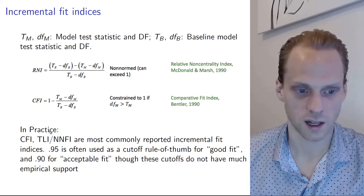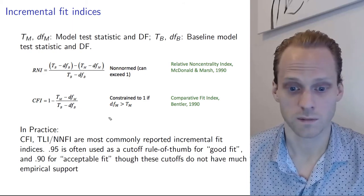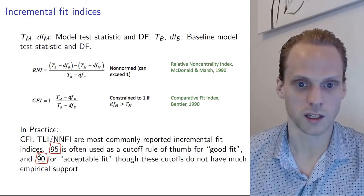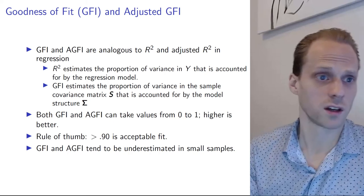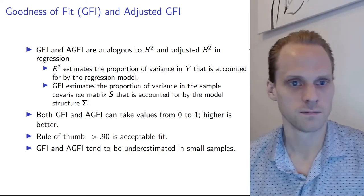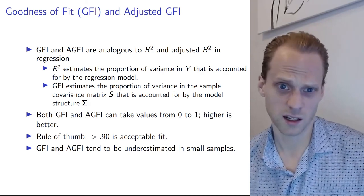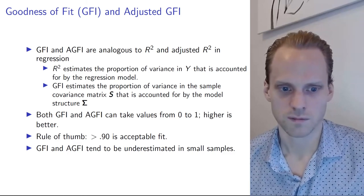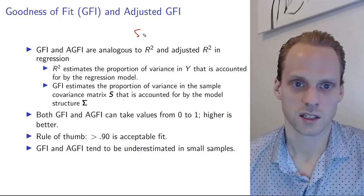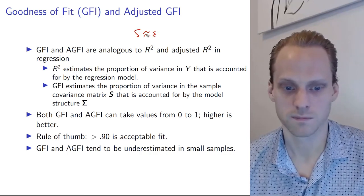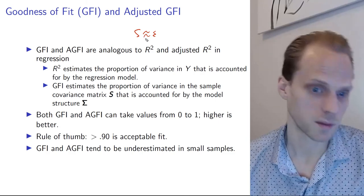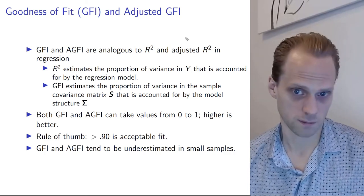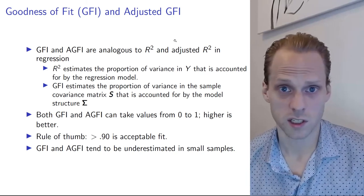Most commonly reported are CFI, TLI, and NNFI, among others. If they're above 0.95 that's a really good fit, but mostly above 0.90 is considered good. Then there is the goodness of fit index, GFI, which is a measure somewhat like R-squared — the explained variance in regression — showing how much the observed covariance matrix S resembles the model-implied matrix sigma. These are also between 0 and 1, with higher being better, and above 0.90 is good.